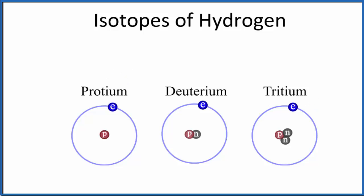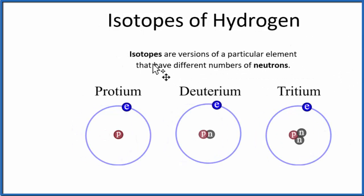If you recall, isotopes—the big idea is we're talking about neutrons here, a difference in neutrons. The definition of isotopes is that they're versions of a particular element but they have different neutrons. So it's all about the neutrons.